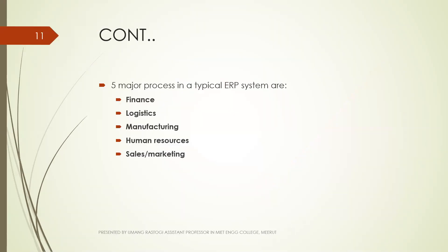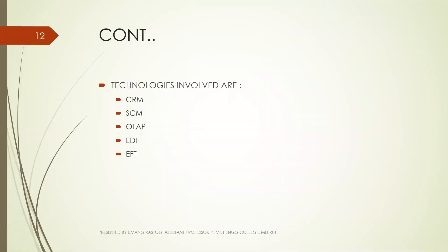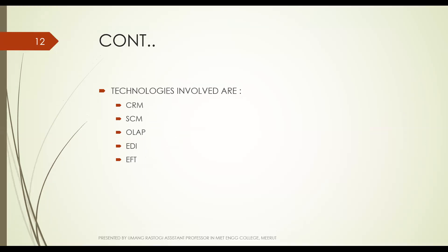The five major processes in ERP are: Finance, Logistics, Manufacturing, Human Resources, and Sales and Marketing. E-business starts with suppliers, which involves manufacturing of products, rendering of services, and providing the service or product.